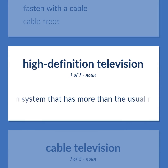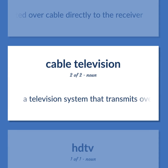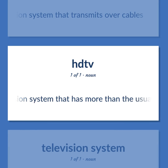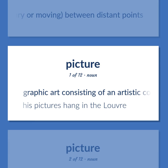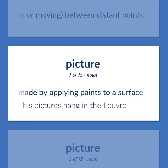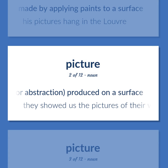High definition: a television system that has more than the usual number of lines per frame so its pictures show more detail. Television that is transmitted over cable directly to the receiver. A telecommunication system that transmits images of objects, stationary or moving, between distant points. Picture: graphic art consisting of an artistic composition made by applying paints to a surface. His pictures hang in the Louvre. A visual representation of an object or scene or person or abstraction, produced on a surface. They showed us the pictures of their wedding.